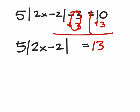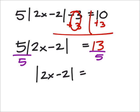And then we will divide both sides by 5. And we've got that absolute value by itself finally. And we know what it equals.